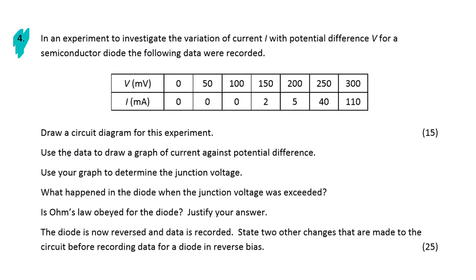Here's the first look at our question 4. We're asked in this experiment to investigate the variation of current with potential difference for a semiconductor diode. We're given a table of data, we're asked for a circuit diagram, the graph, and we have a couple of more questions to do with this information.